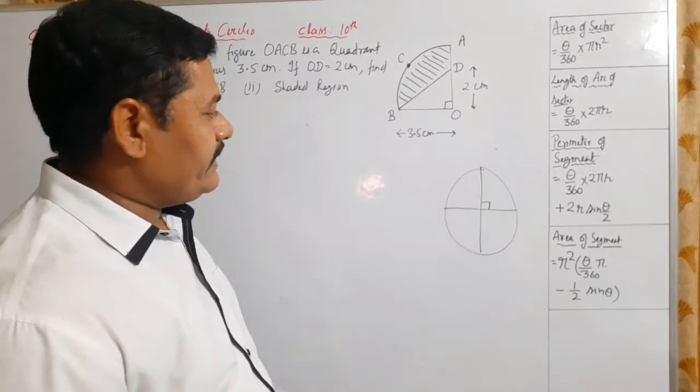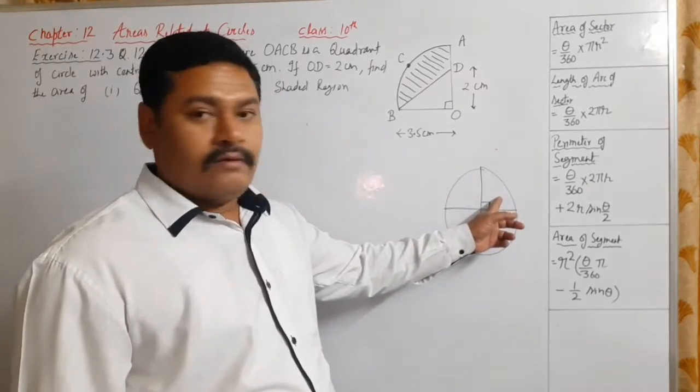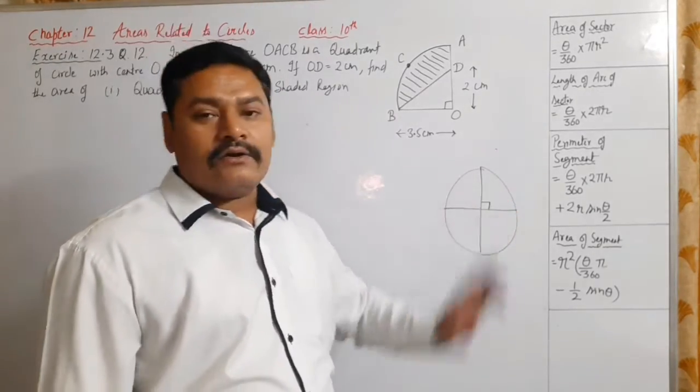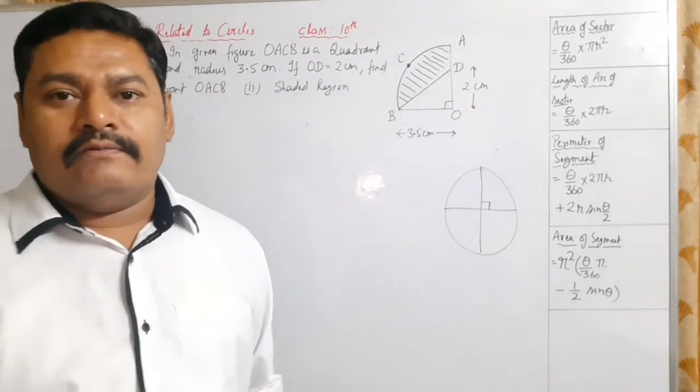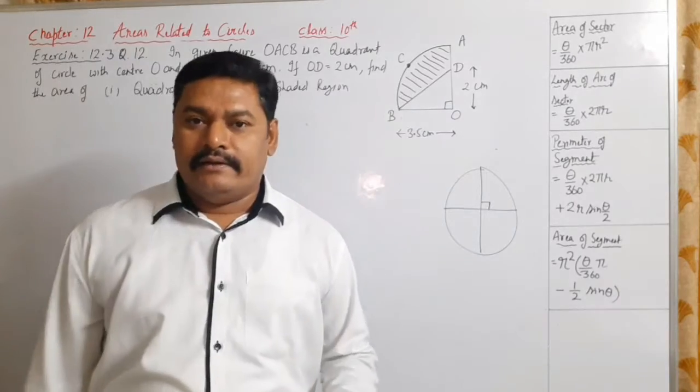If we observe carefully, what is a quadrant? Quadrant is an area bounded by two radii and an arc of the circle. Quadrant is also a sector of the circle with central angle 90 degrees.